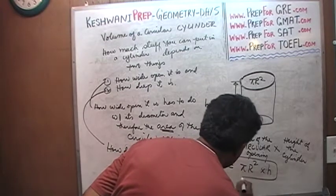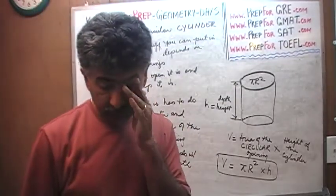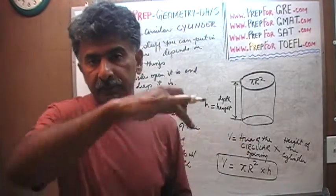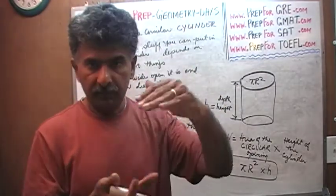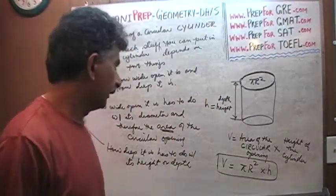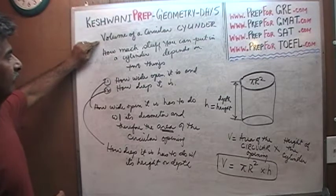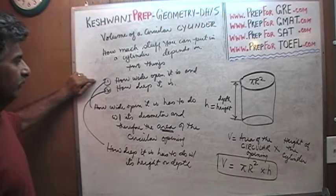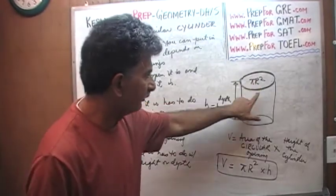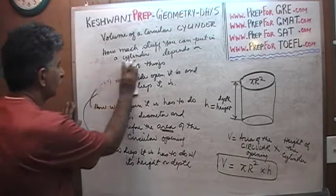The area of the circular opening is simply pi r squared times the height — there we go, that's your volume. There's nothing there to memorize, as long as you know how to figure out the area of the circle. We're just adding one more dimension, which is the height of the cylinder. The area of the circular opening on top times how deep it is — the deeper it is, the more stuff you're going to be able to put inside it. Let's take a look at a couple of examples. Volume of a cylinder depends on how wide open it is — pi r squared — times the depth or height. Multiply the two concepts, that's it.